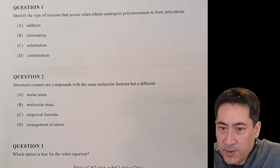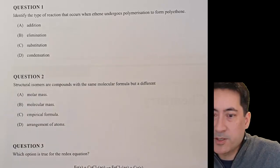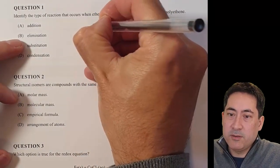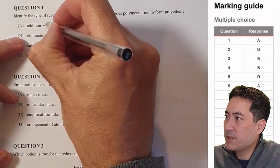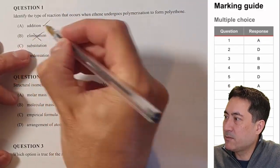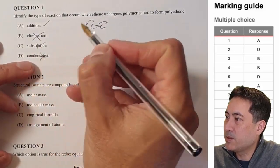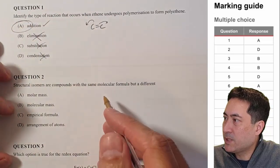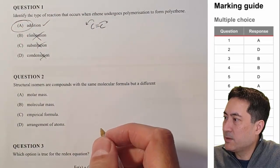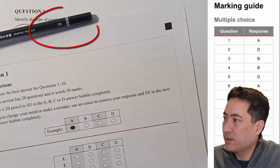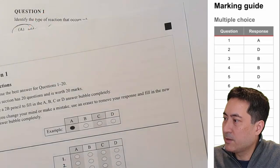First question: identify the type of reaction that occurs when undergoing polymerization to form polyurethane. That one is clearly addition, but you always double check — crossing out every single one. Nothing's been eliminated, nothing's been substituted, no molecule comes out. They simply break off and rejoin. So I found the sheet and circled one A.